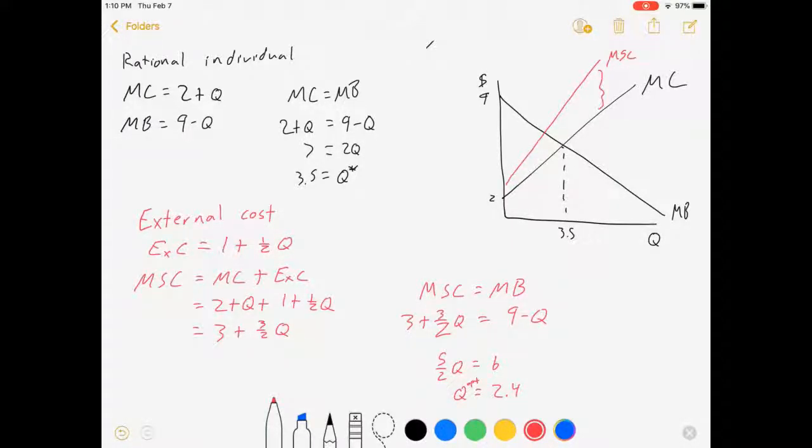The external cost is the gap between the marginal social cost and the marginal cost itself. And the individual, the amount of smoking that's optimal for society now, is 2.4.